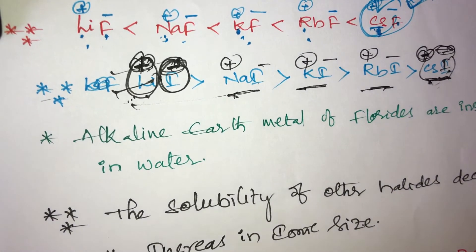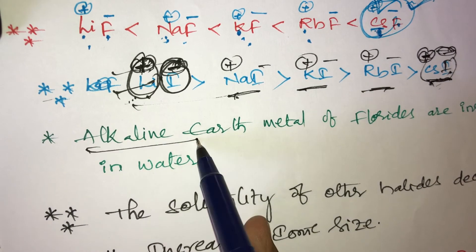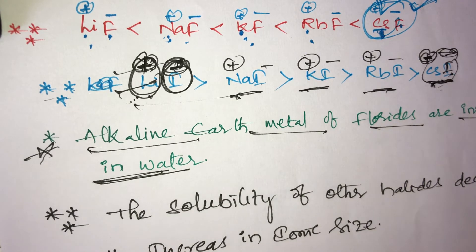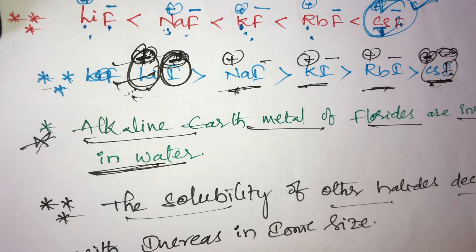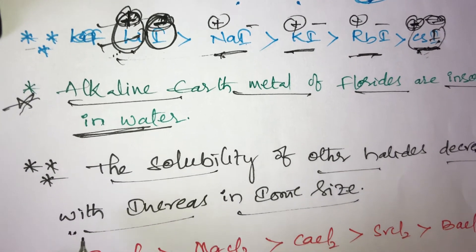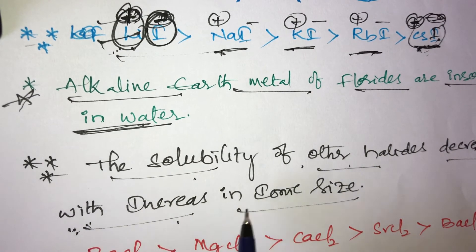Next, in alkaline earth metals: all fluorides of alkaline earth metals — beryllium fluoride, magnesium fluoride, calcium fluoride — are insoluble in water. The solubility of other halides decreases with increase in ionic size. This is also a very important concept.